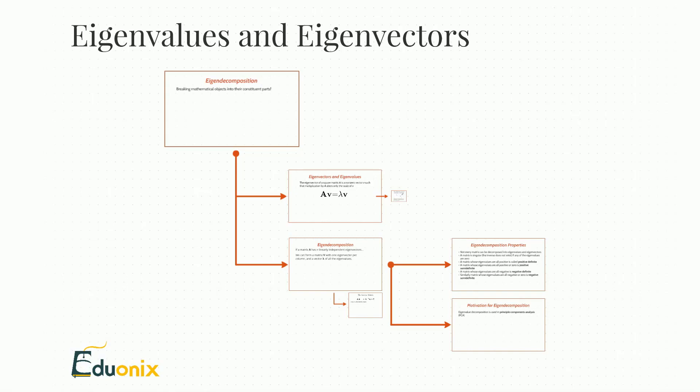In this lecture, we're going to talk about eigendecomposition. We'll explain eigenvectors and eigenvalues, what they are. We'll talk a little bit about some of the necessary matrices that go into finding eigenvalues and eigenvectors, such as the identity matrix and the inverse matrix. Then we're going to move on to some of the properties of eigendecomposition and conclude with the motivation for eigendecomposition, which — spoiler alert — is going to be principal component analysis. So let's go ahead and dive right in.